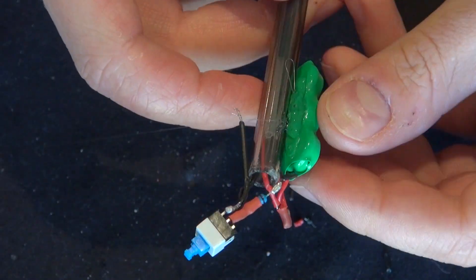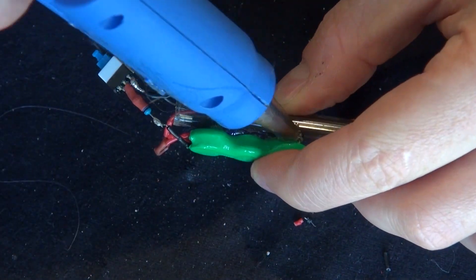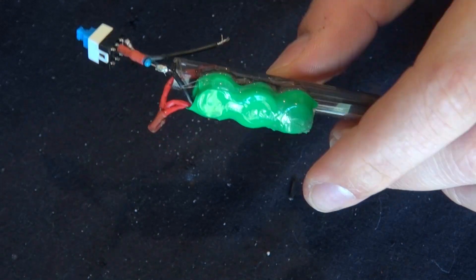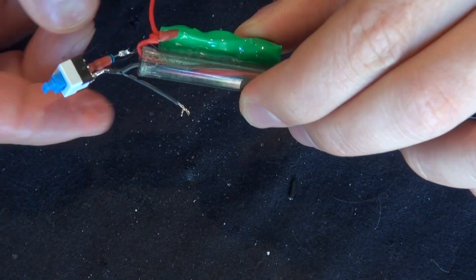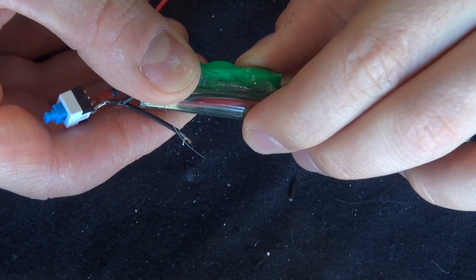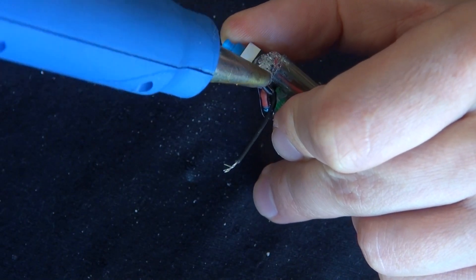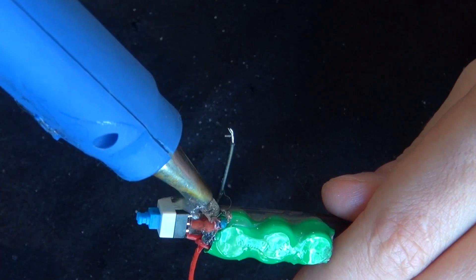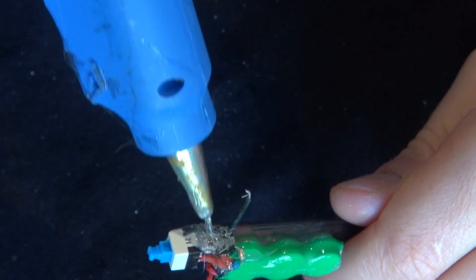Now get your hot glue and glue your batteries to your pen. Make sure it's all glued into place and secured and solid. Now put glue around the switch. Make sure everything is all glued in and solid into place.